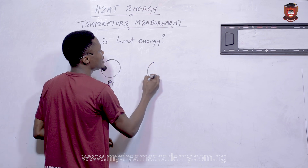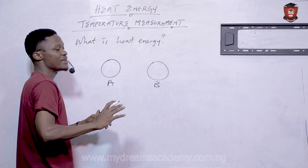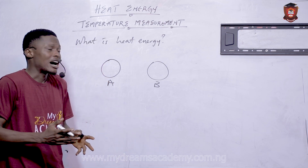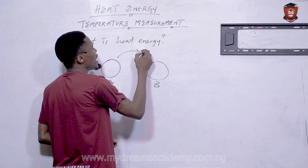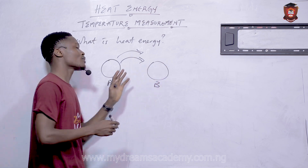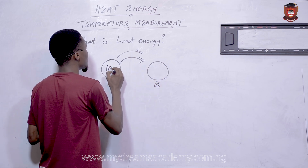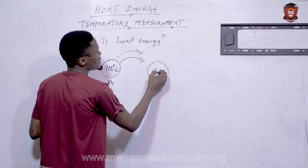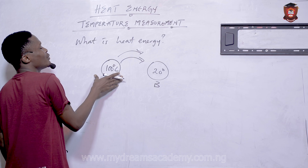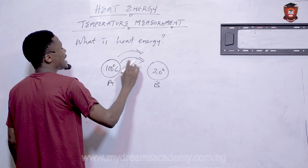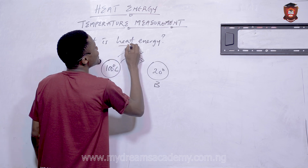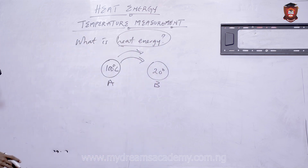So imagine I have two bodies — this is body A and this is body B. These two bodies can be isolated or they might be in contact with each other. If there is a transfer of energy from one body to another due to their difference in temperature — for example, this one is at 100 degrees Celsius and this one is at 20 degrees Celsius — there will be a transfer of energy from the hotter object to the colder object.